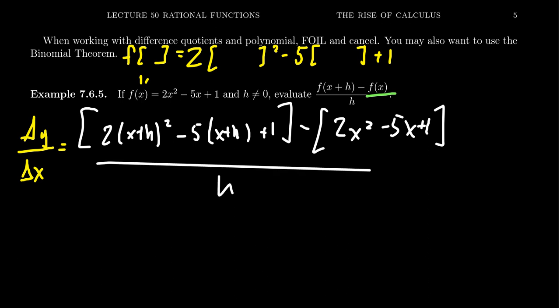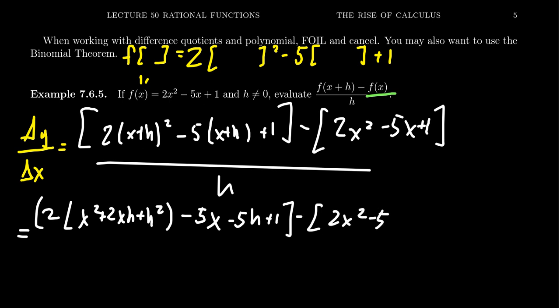So now we need to expand the numerator so we can combine like terms. That means we're going to have to foil some things out. The x plus h squared is foil. You might not need the binomial theorem to do x plus h squared, because you probably had a lot of practice with it. When you multiply it out, you're going to get x² plus 2xh plus h². Be aware that x plus h quantity squared is not x² plus h². There is a middle term, the 2xh there.